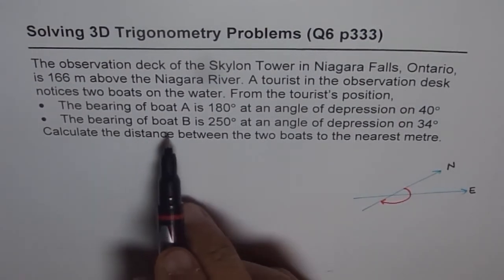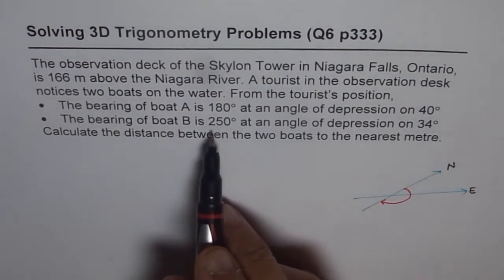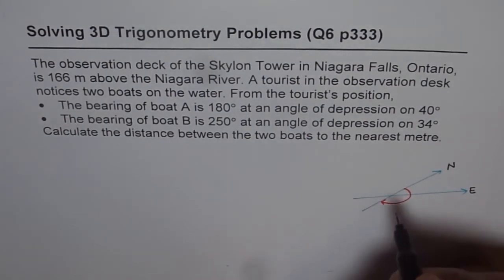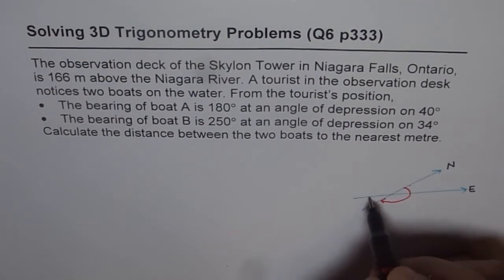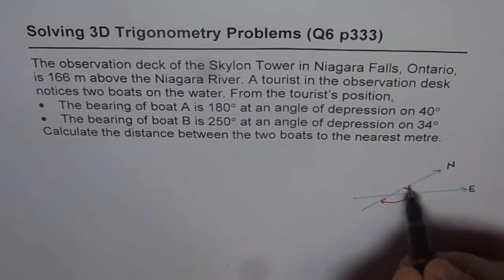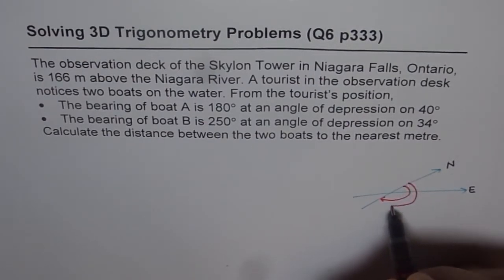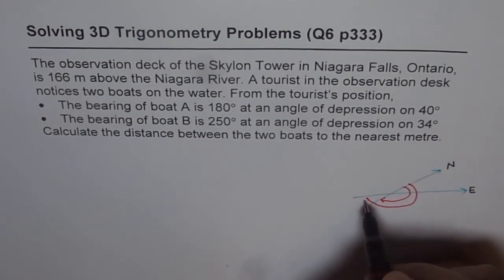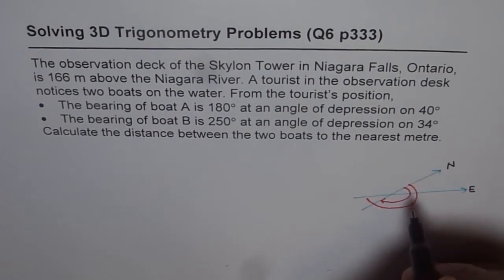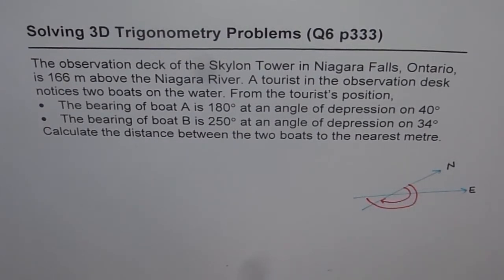When we say the bearing of boat B is 250 degrees, so 250 degrees means that is 180 and this is 270, so it is more than 180 and kind of like this. So that becomes 250 degrees — 20 less than 270. So these are the two bearing angles.